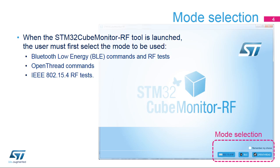When the tool is launched, the user must select one of three modes: 802.15.4 RF — select this mode to test functions and applications based on the IEEE 802.15.4 wireless protocol; BLE — select this mode to send commands using open-thread software based on the low-power thread mesh network protocol.